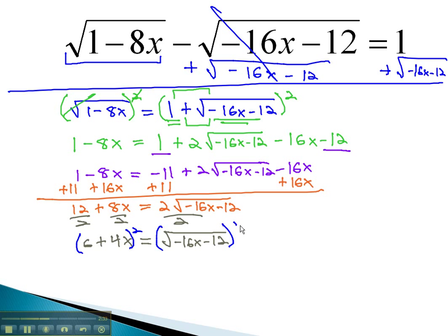Clear a square root by squaring both sides. 6 squared is 36. 24 and 24 is 48x plus 16x squared equals negative 16x minus 12.